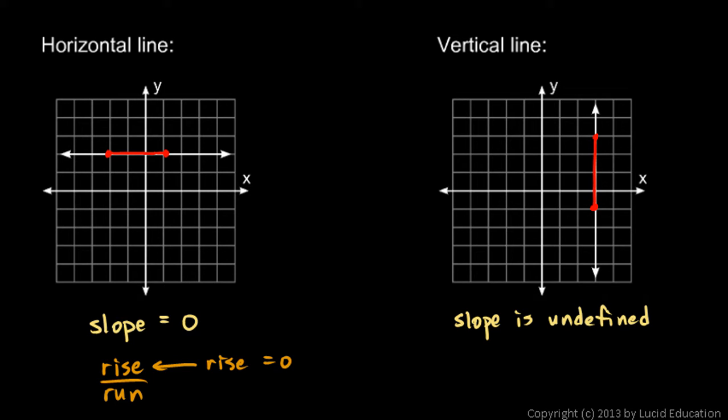And the reason is if we do rise over run, in this case, you see these two points, the horizontal difference between those two points, the run, is equal to zero. And so that's the division by zero in the denominator there, which we can't do.